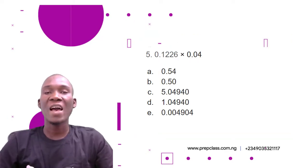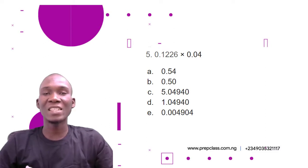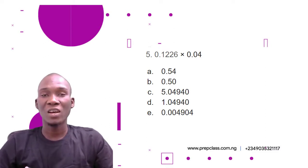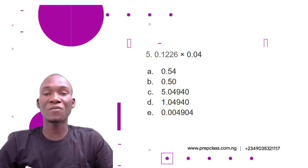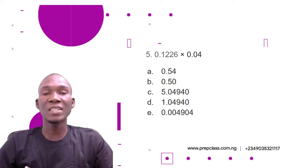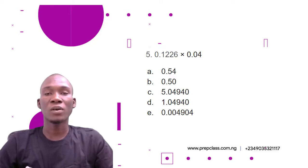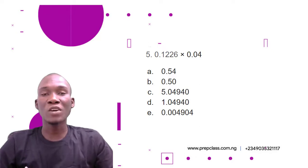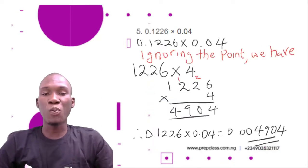Now question number five — the last question in this video. In our next video we will solve further from our UGOSE UGO mathematics past questions. Question five: multiply 0.1226 by 0.04. The options are: A) 0.54; B) 0.50; C) 5.04940; D) 1.04940; E) 0.004904.